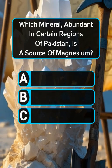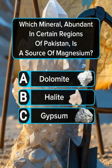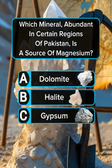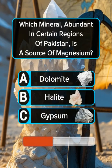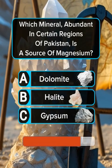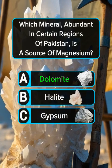Question 3. Which mineral, abundant in certain regions of Pakistan, is a source of magnesium? Answer A: Dolomite.